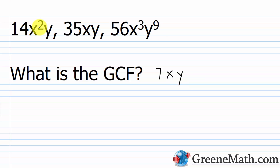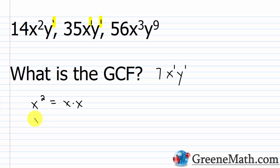Looking at x: I have x squared, x to the first power, and x cubed. The smallest is x to the first power, so this stays as just x. For y: I have y to the first power, y to the first power, and y to the ninth power. Either of the first-power terms is the smallest, so you put y to the first power. Why does that work? The smallest exponent is the least number of occurrences of that variable. x squared is x times x, x to the first is just x, x cubed is x times x times x — one x is common to everything. You can't put a second x in there because that's not common to all terms.